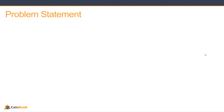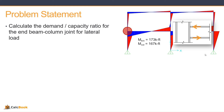So let's take a look at the problem statement. It's going to be a little bit different today — we're going to look at two different scenarios. The first is looking at the demand capacity ratio for the end beam-column joint for lateral load. We've got a two-story, two-bay moment frame, and we're going to be looking at that left joint on the first story.